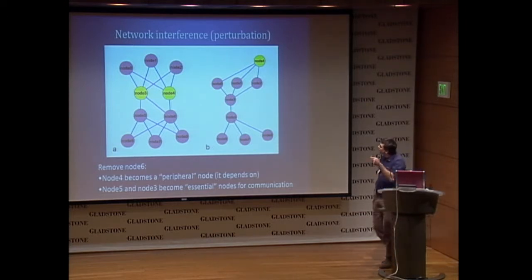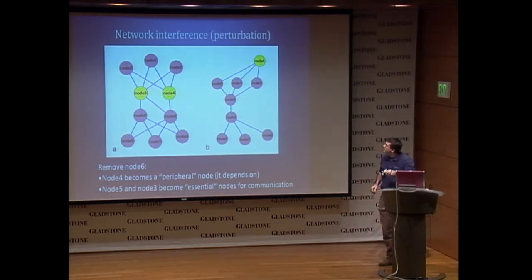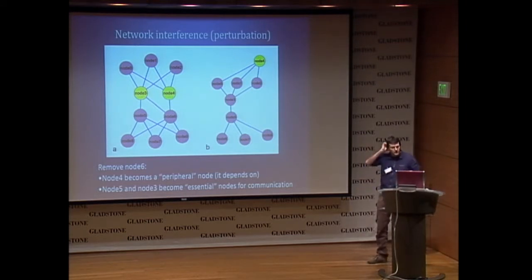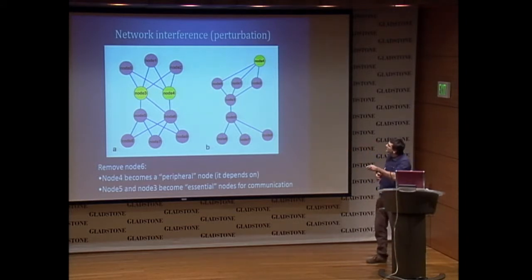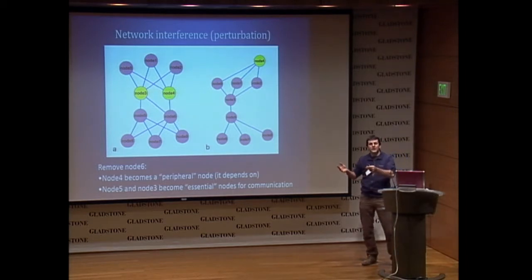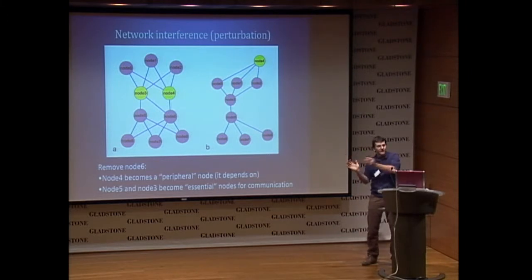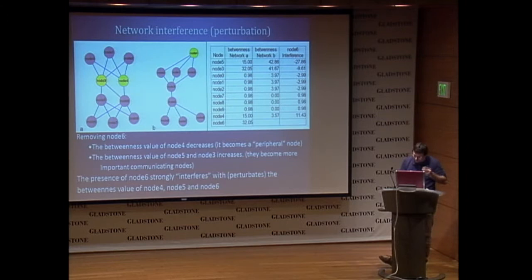Maybe if you think about social networks, you are important in your social network only because you are a friend of someone who is important. So if we remove him, you are not important. In Italian politics, Berlusconi is a central node and has many friends, and they don't want him to leave because they are important only because they are friends of him. So this applies not only to biology.